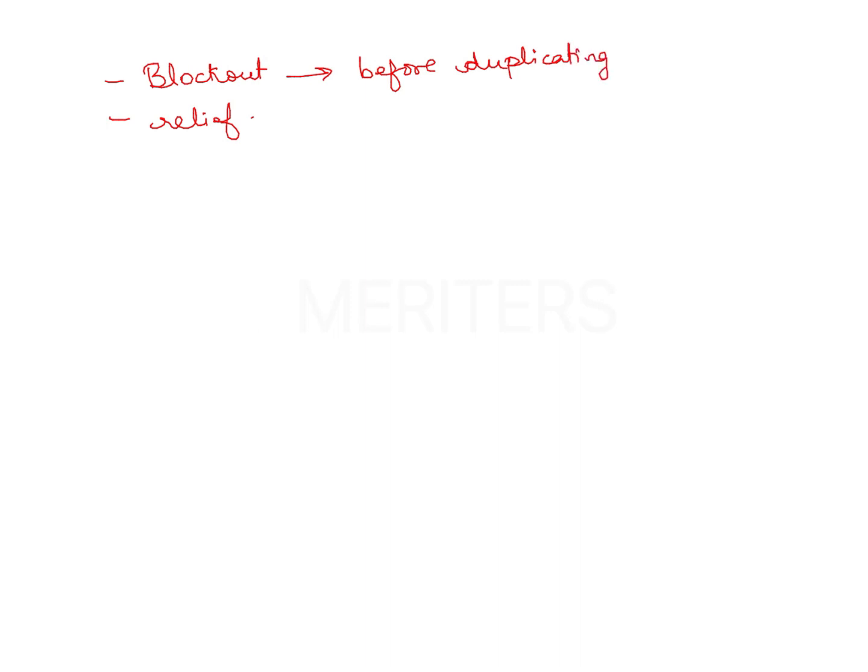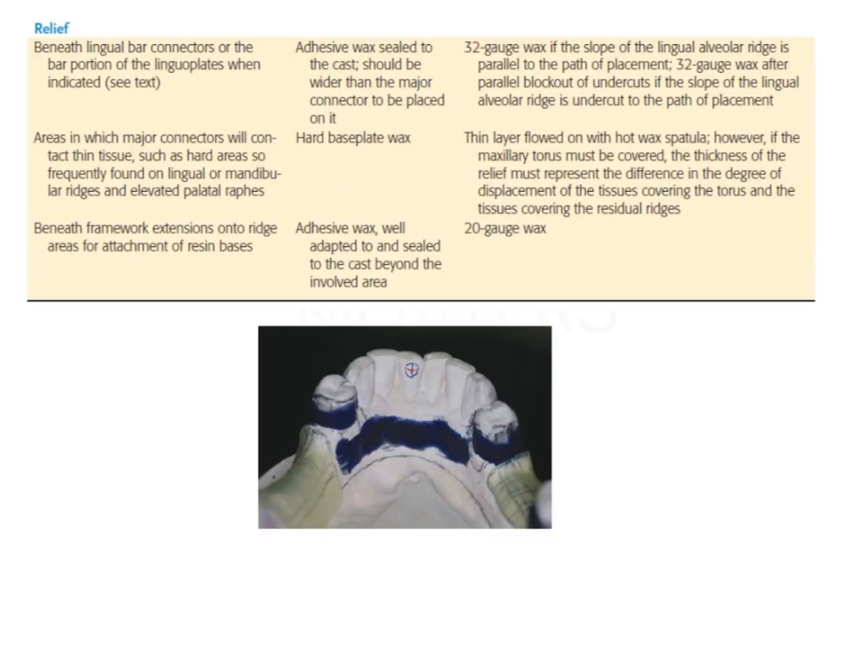Actually relief is also provided before duplicating the cast, but I will show you the difference. Before duplicating the cast, all the areas that are going to interfere in the path of placement of the denture - for example, the interdental areas, the contours of the teeth - if they're going to interfere with placement of the denture, then you are going to block these areas.